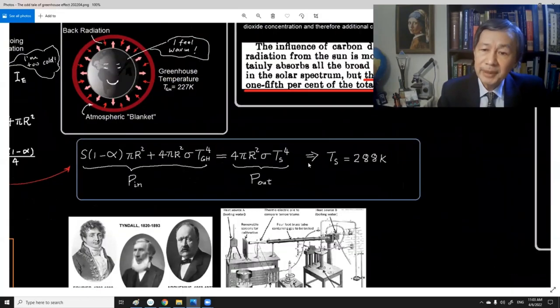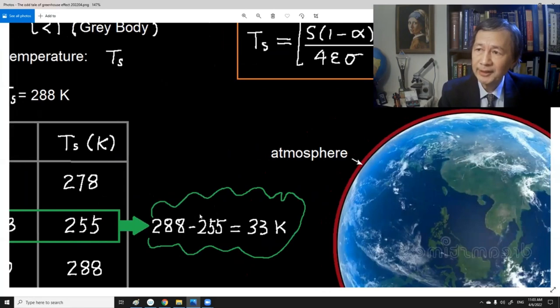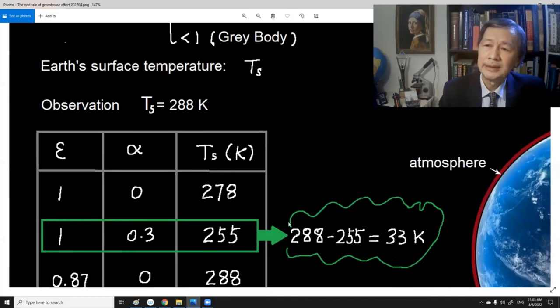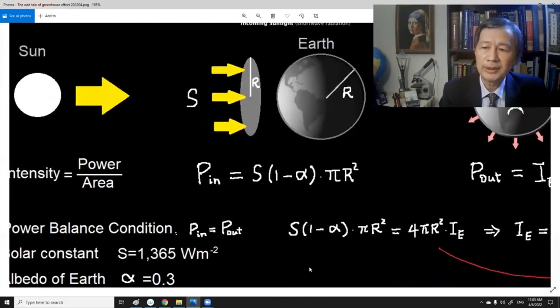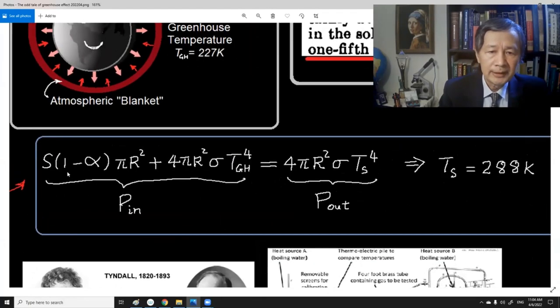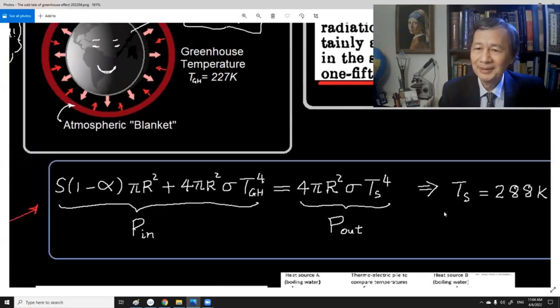Now, in order to explain the discrepancy, without reconsidering their proposition, namely the assumption that the Earth can be treated as a black body, they just modified the equation of this power balance equation. This is the original power balance equation. They have to add another term here. The first term will represent the solar radiation from the sun. And the second term would be the greenhouse effect, namely the radiation radiated by the greenhouse gases in our atmosphere. So that by using this equation, we can work out the exact surface temperature.